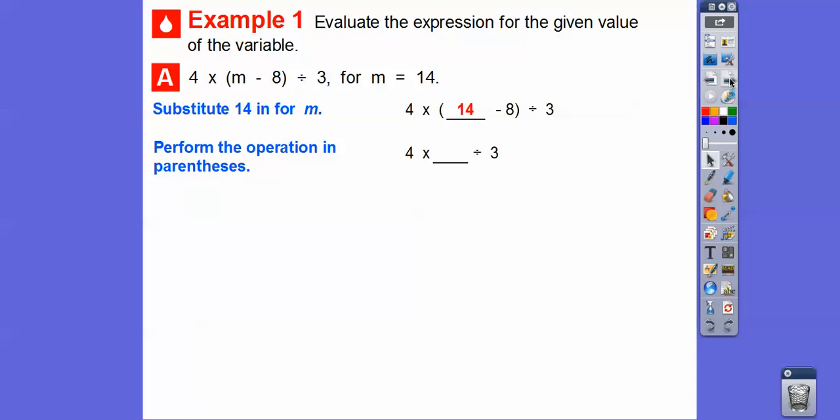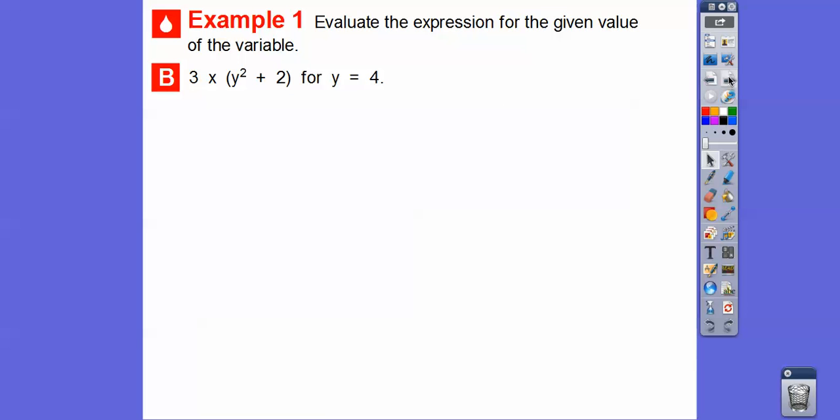Then we'll go ahead and perform the order of operations, which says do the parentheses first. So 14 minus 8 is 6. And then we multiply from left to right. Multiply or divide. Now if division came first, I would divide first, but here we multiply first because that's what comes from left to right. So 4 times 6 is 24. And then we go ahead and do 24 divided by 3 is 8.